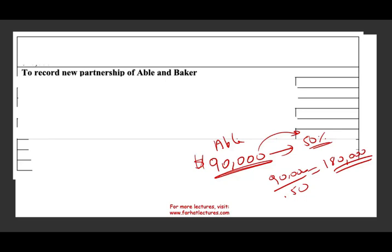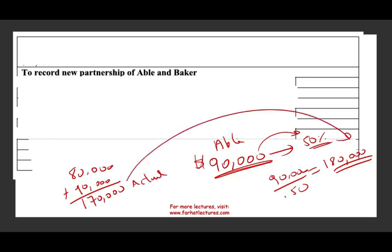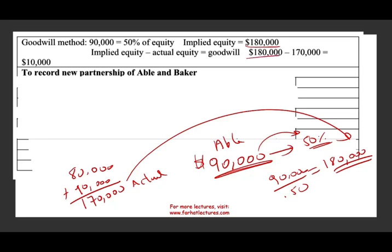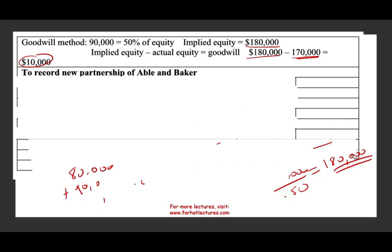One contributed 90,000 and one contributed 80,000 — that's their net contribution — so the actual equity is 170,000, but the implied value is 180,000. It means they have other resources that are not quantifiable and cannot be put on the books. We call them goodwill. The implied equity is 180,000, and since they only contributed 170,000, there is additional goodwill of $10,000.